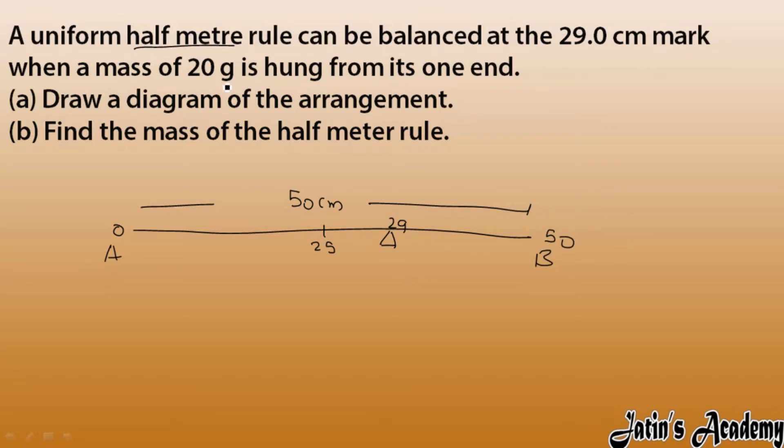When a mass of 20 grams is hung from its one end, I don't know which end we have to place. So think, where is the weight acting? Weight of this half meter rule is acting here. Which moment is this weight creating? Force into perpendicular distance.